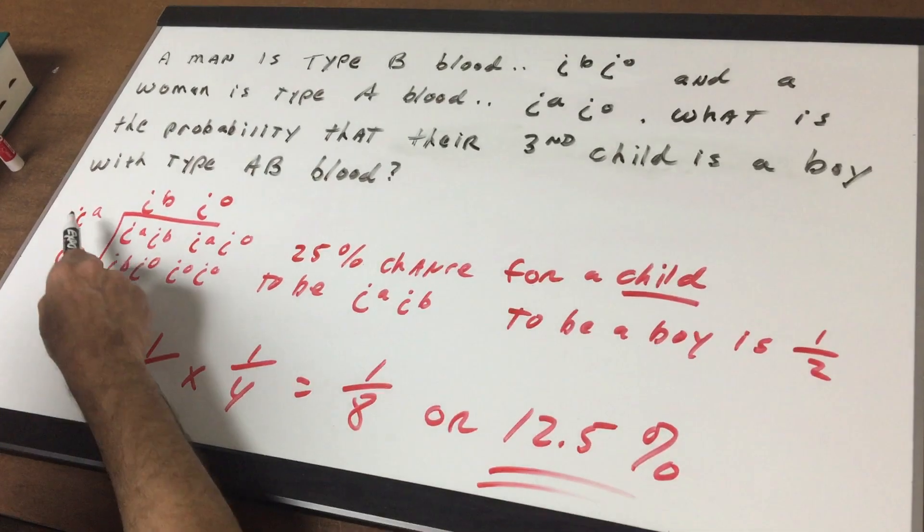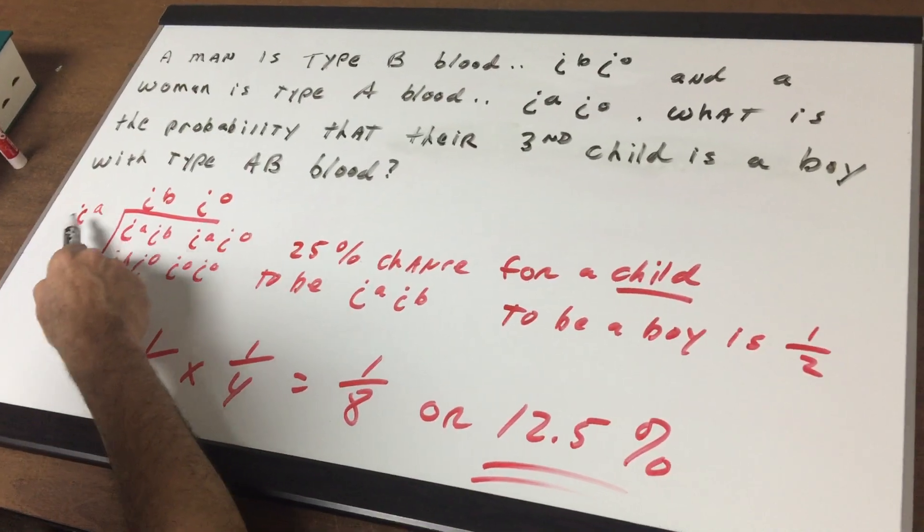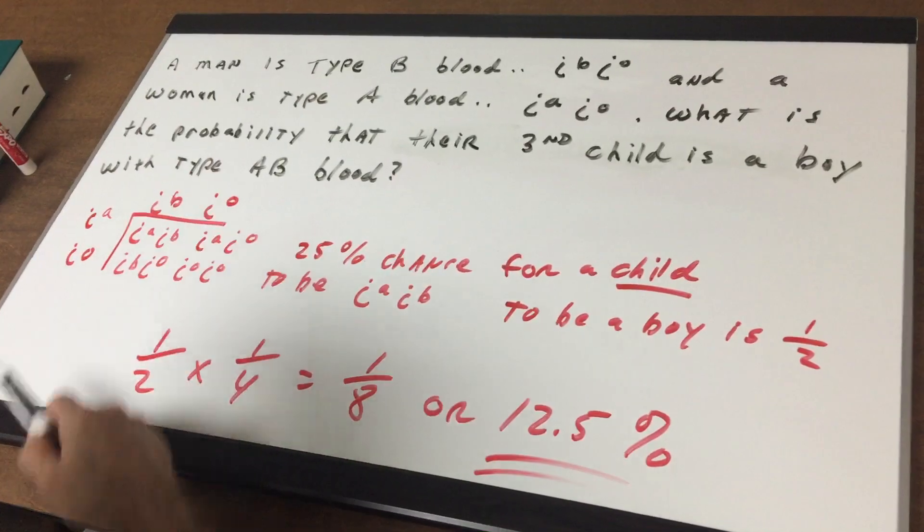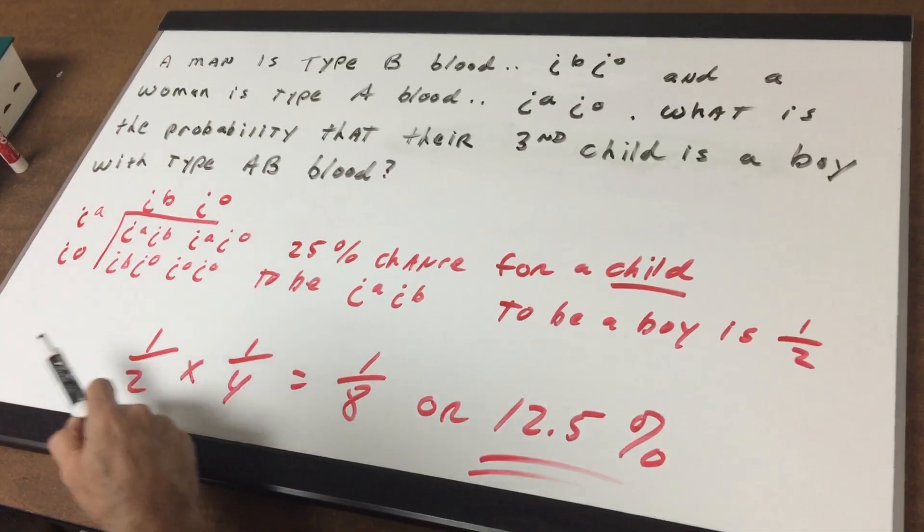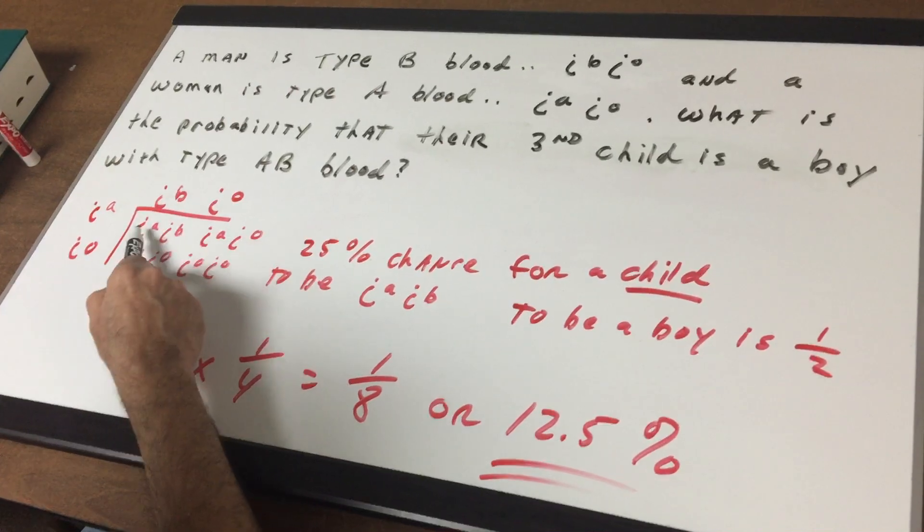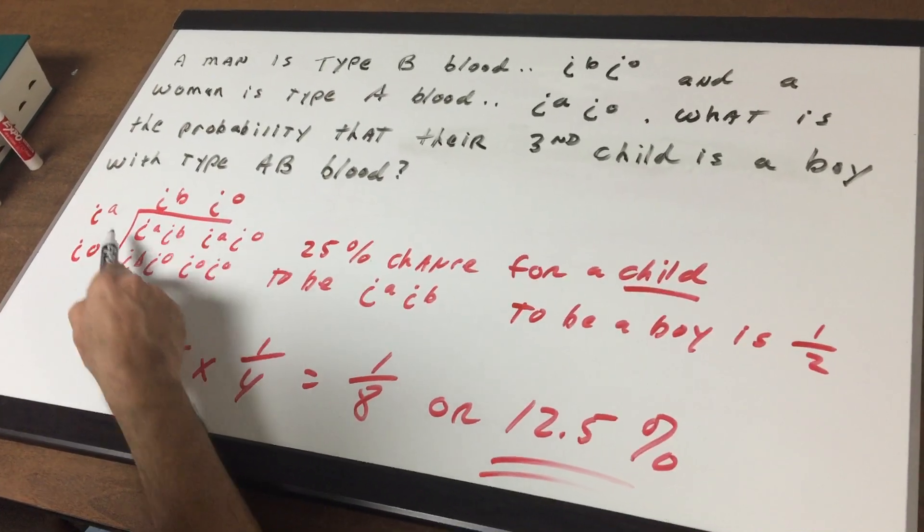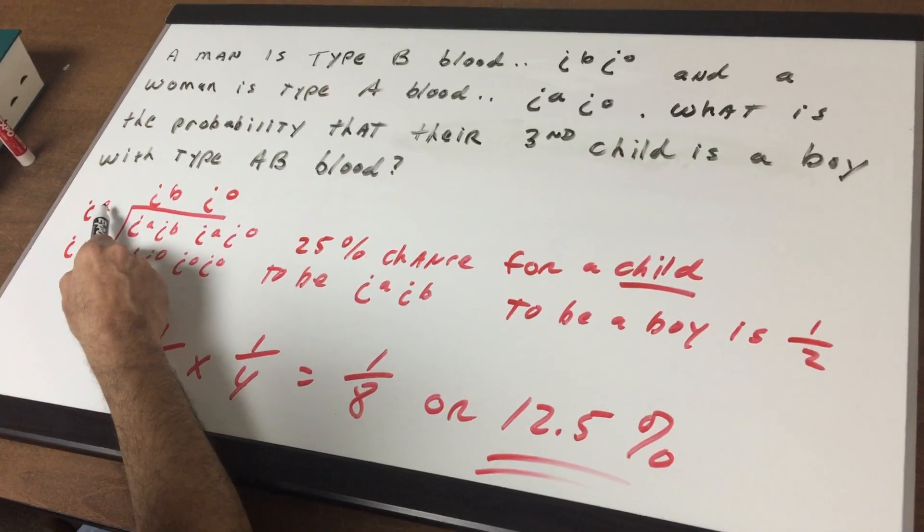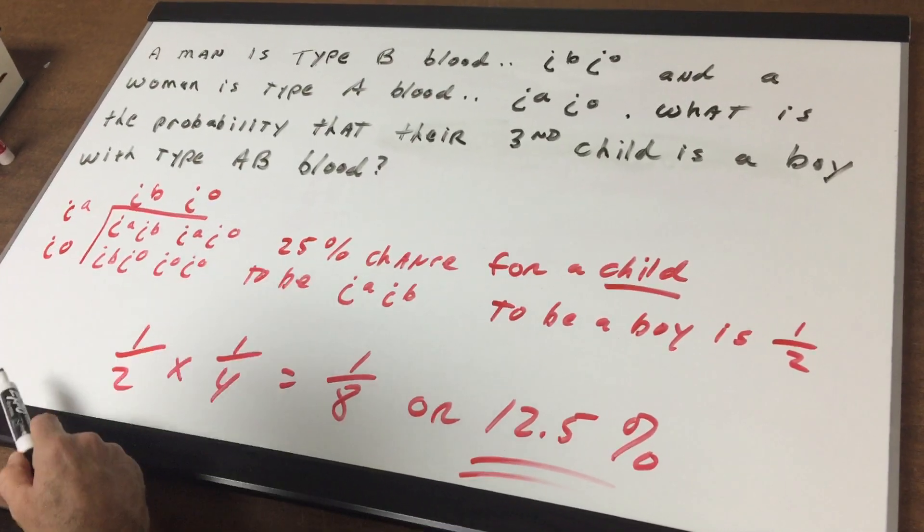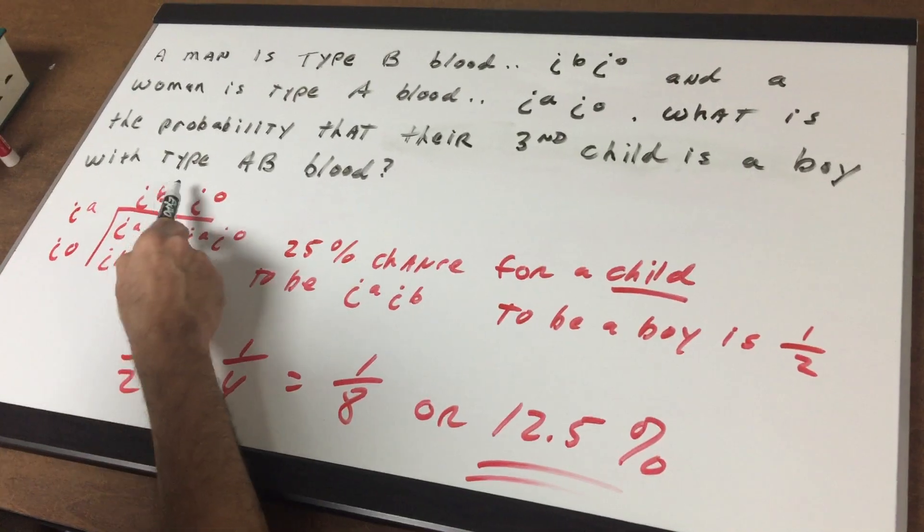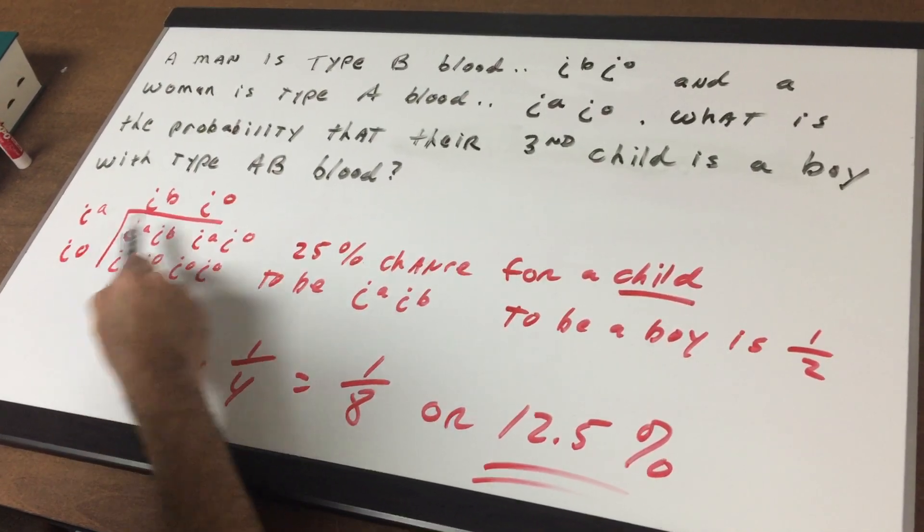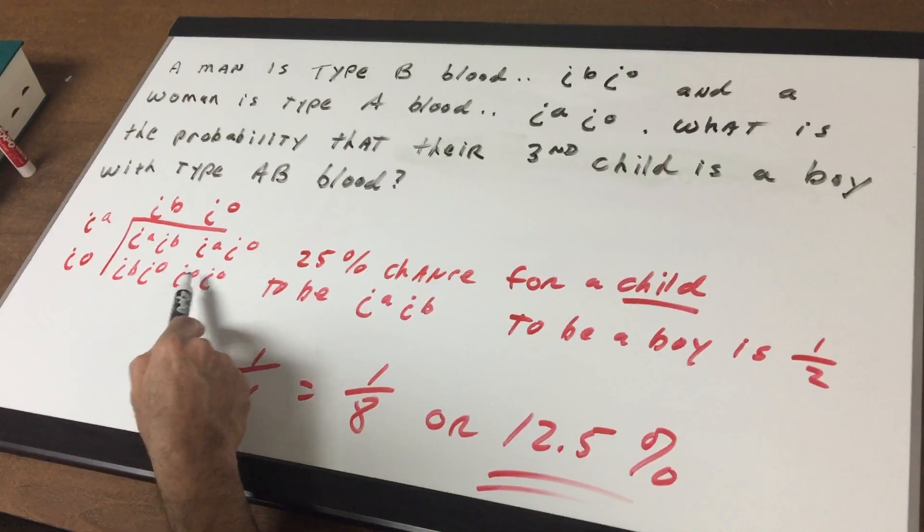Well, the first thing I'm going to do is let's take IA and IO and cross it with IB, IO in this type of Punnett square. If you multiply IA and IB, you get IA, IB, and you multiply IA with IO, you get IA and IO. IO and IB gives you IB, IO, and IO, IO gives you IO and IO.